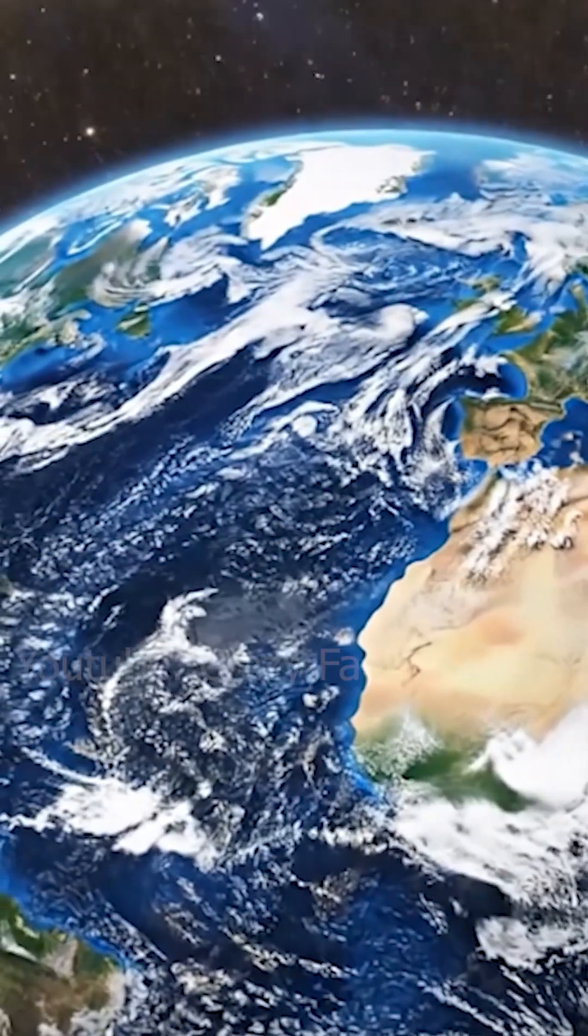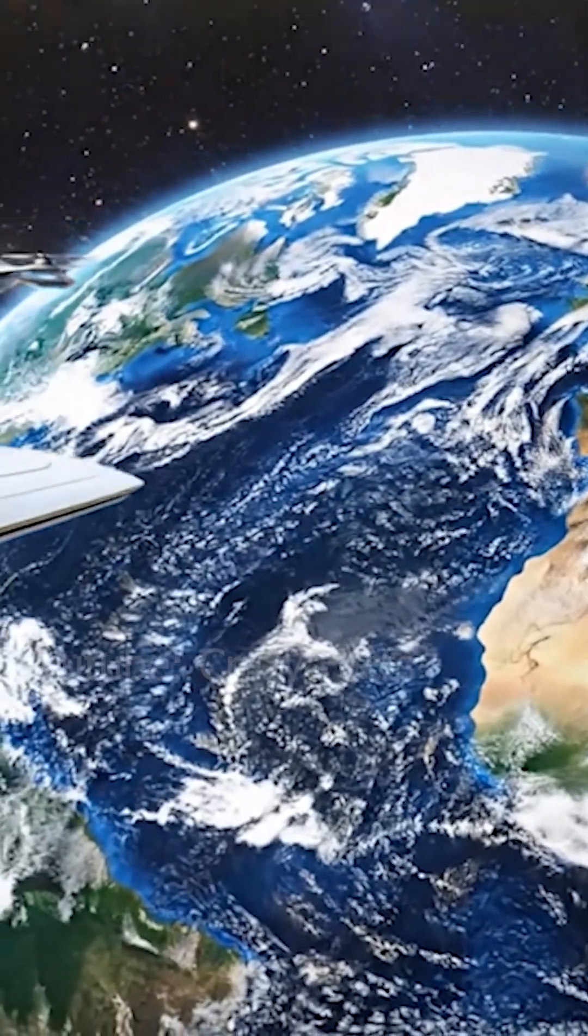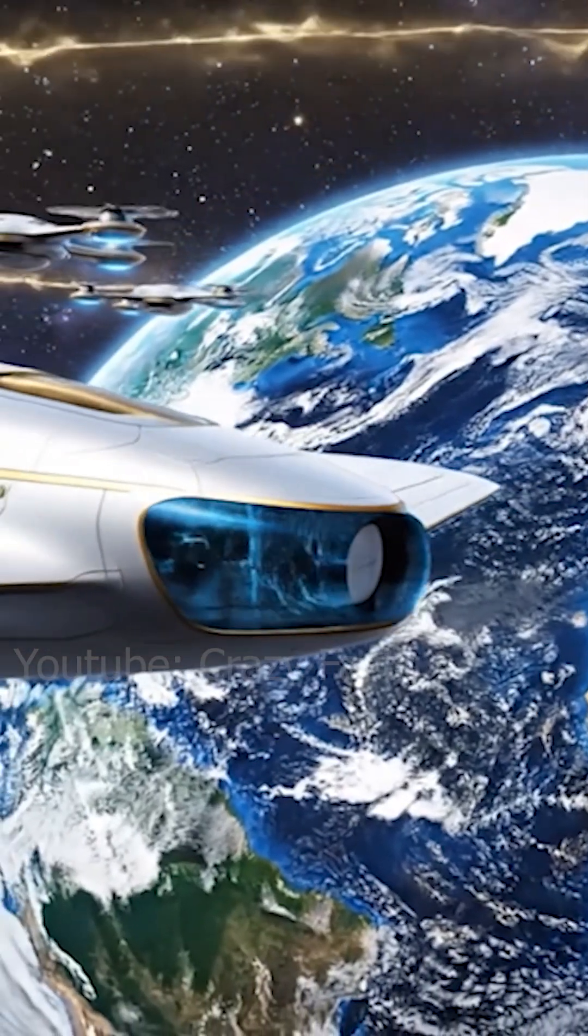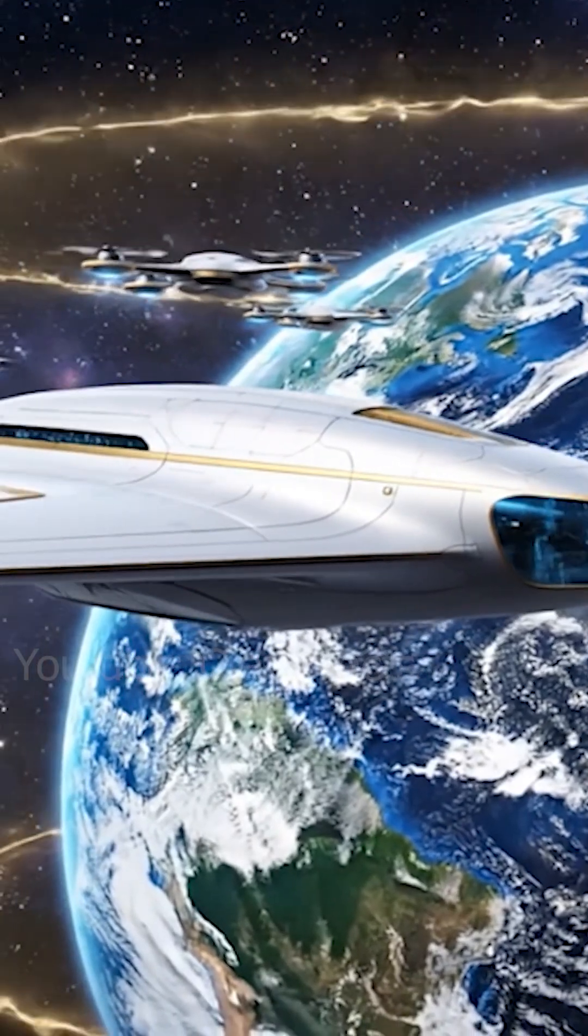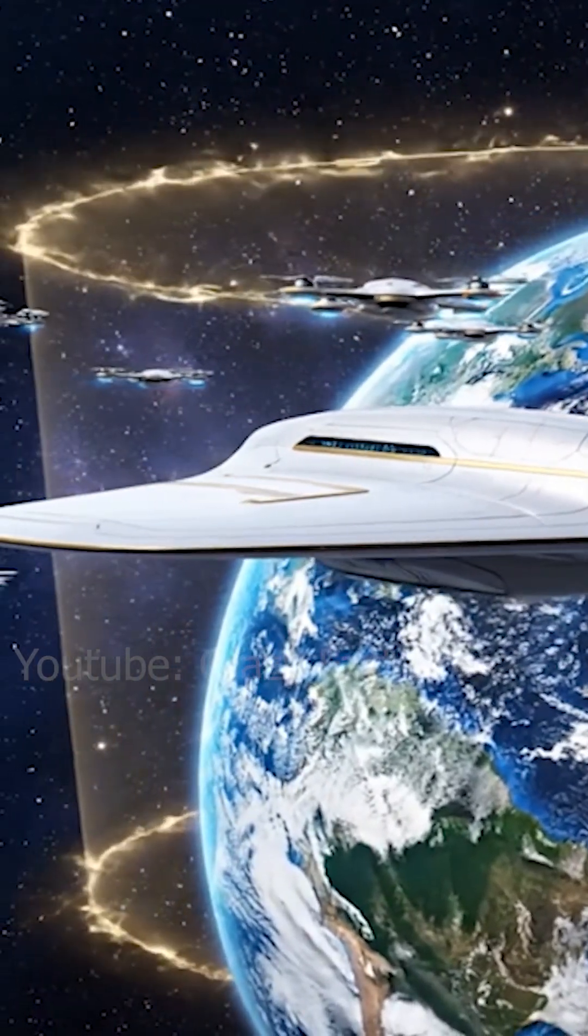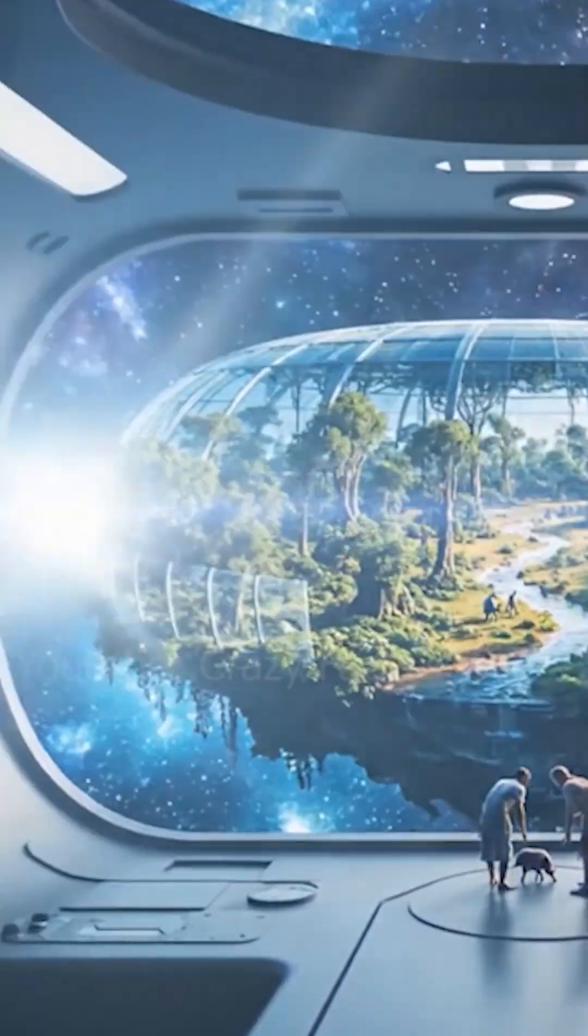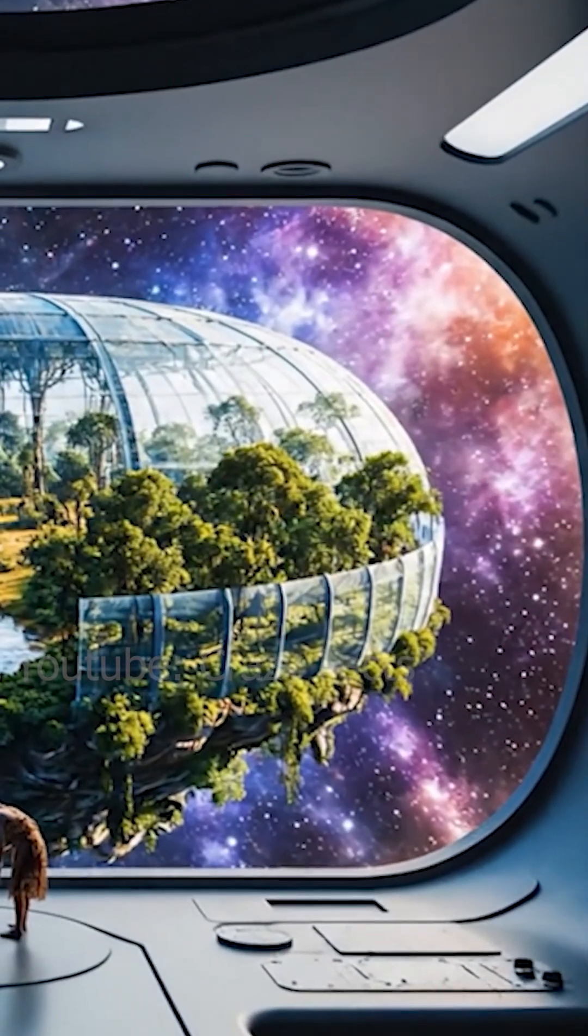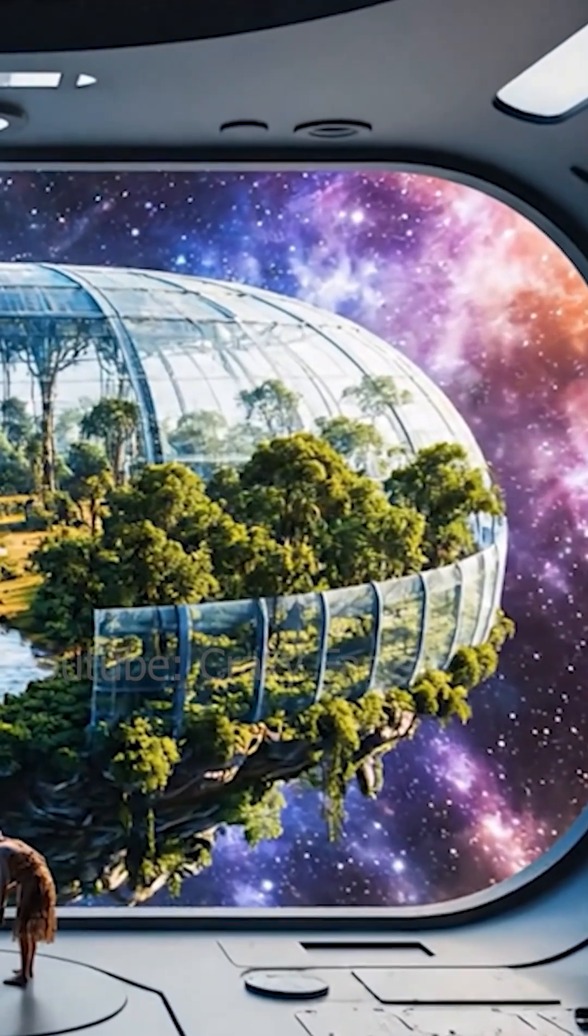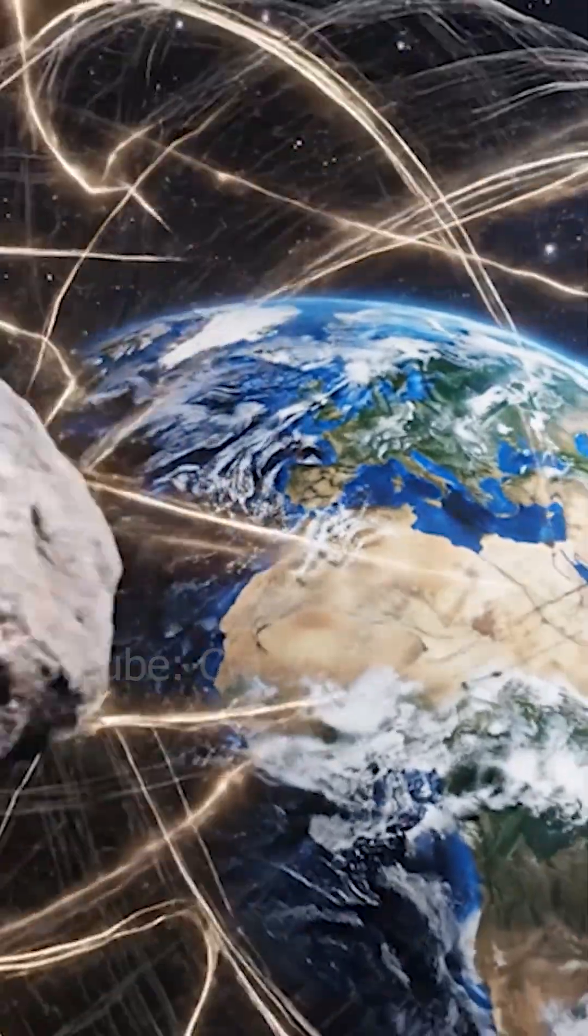In this scenario, Earth is treated as a kind of cosmic wildlife reserve, a protected habitat established by a more advanced species. Humanity then becomes a subject of observation, much like how we study animals in national parks, while trying not to disturb their natural behavior.